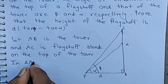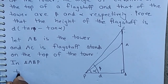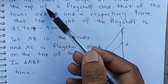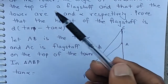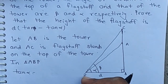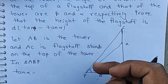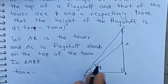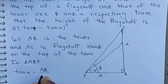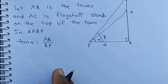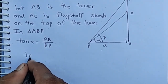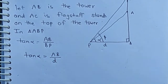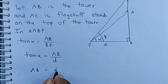In triangle ABP, we apply tan(alpha). The angle of elevation of the top of the tower from point P is alpha. So tan(alpha) equals AB by BP. Since BP equals D, the value of AB is D·tan(alpha).